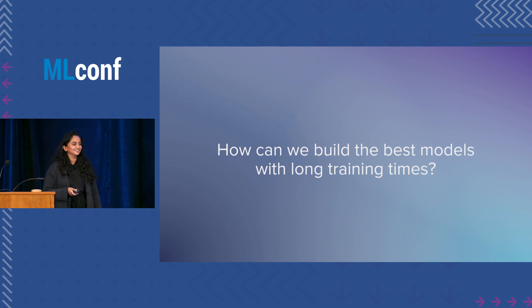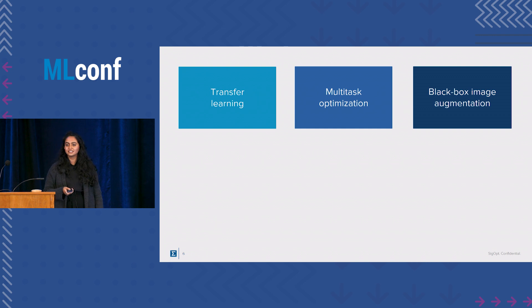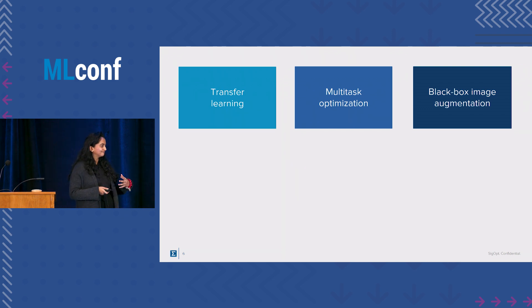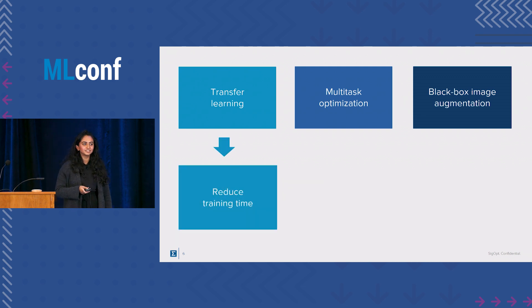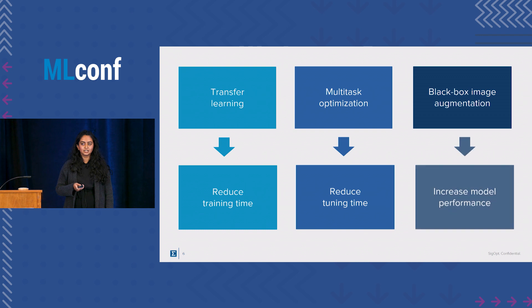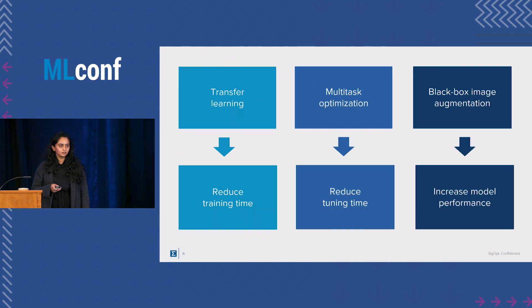How can we build the best possible models given long training times? Today we're going to focus on three efficient techniques and build a use case that integrates all three: transfer learning to reduce training time, multitask optimization to reduce tuning time, and black box image augmentation to efficiently increase model performance.